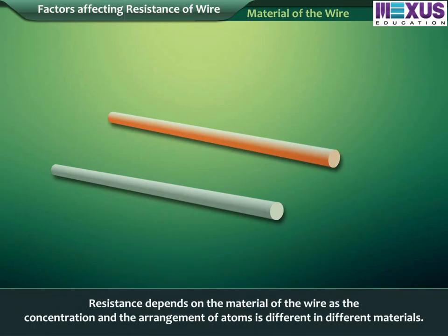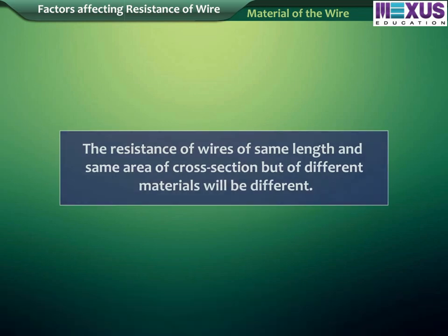Material of the wire. Resistance depends on the material of the wire, as there is different concentration and different arrangement of atoms in different materials. Thus, the resistance of wires of same length and same area of cross-section, but of different materials will be different.